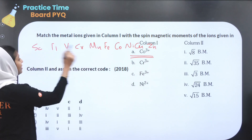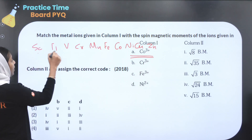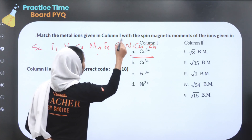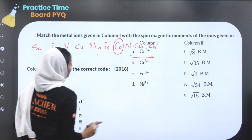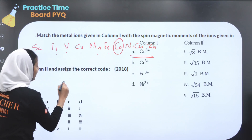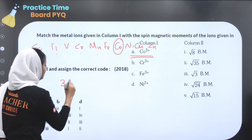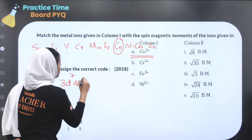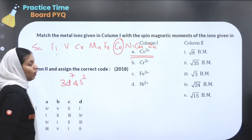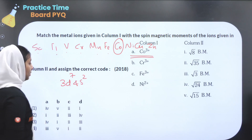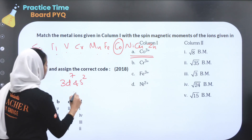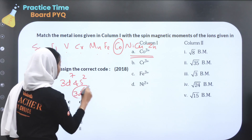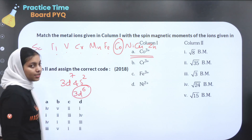Cobalt has atomic number 27. Its atomic numbers in the series go 21, 22, 23, 24, 25, 26, 27. Cobalt 27 has configuration 3d⁷ 4s²... so Co³⁺ has electronic configuration 3d⁶.